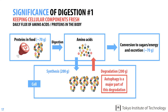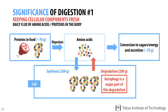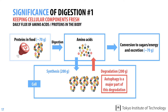To explain the first of these, I'd like to use degradation of proteins as one example, although autophagy degrades a wide range of molecules within cells. In this slide, we can see the daily flux of amino acids and proteins in a human body. We ingest about 70 grams of protein from food every day, which is digested into amino acids and delivered to cells throughout our bodies. However, this amount is far less than the amount of proteins produced in our bodies.